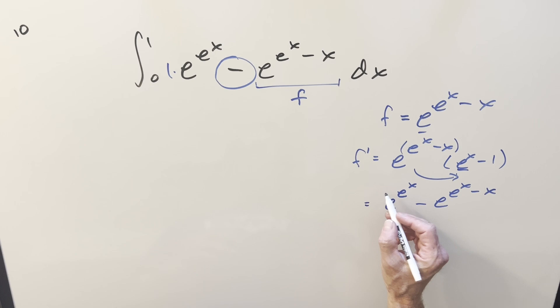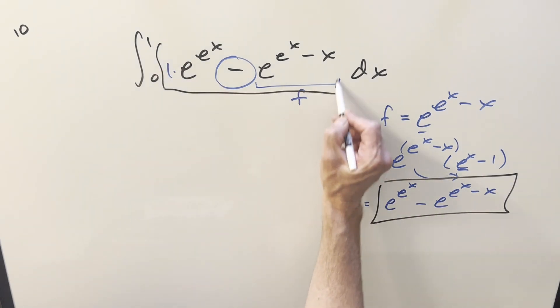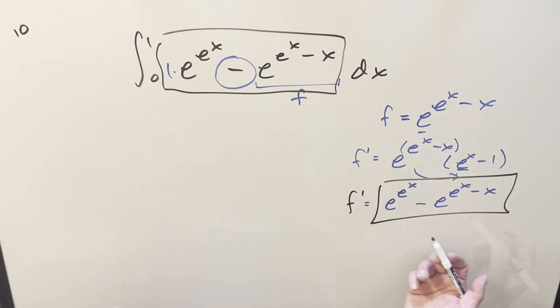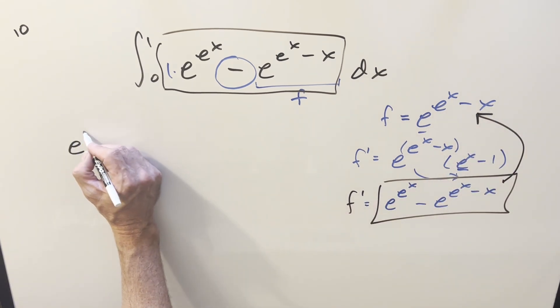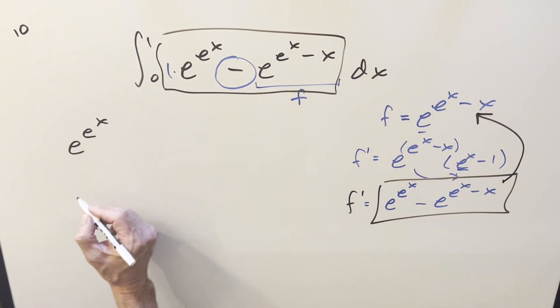But what just happened is this f prime value is the whole thing. This is the same thing as all of this. So accidentally, I found the antiderivative. The integral of this thing is going to be just this.